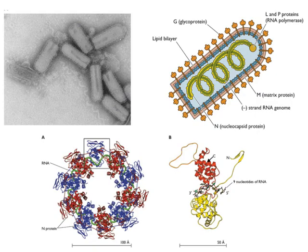VSV, vesicular stomatitis virus, and rabies virus are all made with helical symmetry. The nucleocapsid is more tightly packed than a schematic suggests, and it's encased in an envelope. The viral RNA is bound to this nucleocapsid protein just like it is in tobacco mosaic virus. Here is a single molecule of this nucleocapsid protein from an X-ray structure, binding nine nucleotides of RNA. The RNA genome of this negative-stranded virus is coated with these N nucleocapsid proteins that each bind nine nucleotides. They interact specifically with the RNA, and then each additional protein molecule interacts maximally with the previous nucleoprotein.